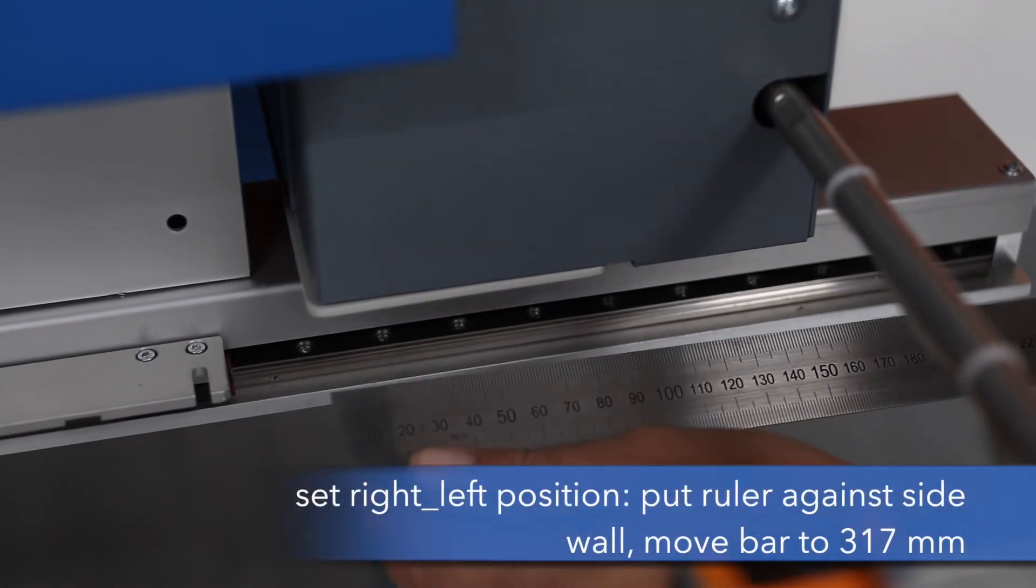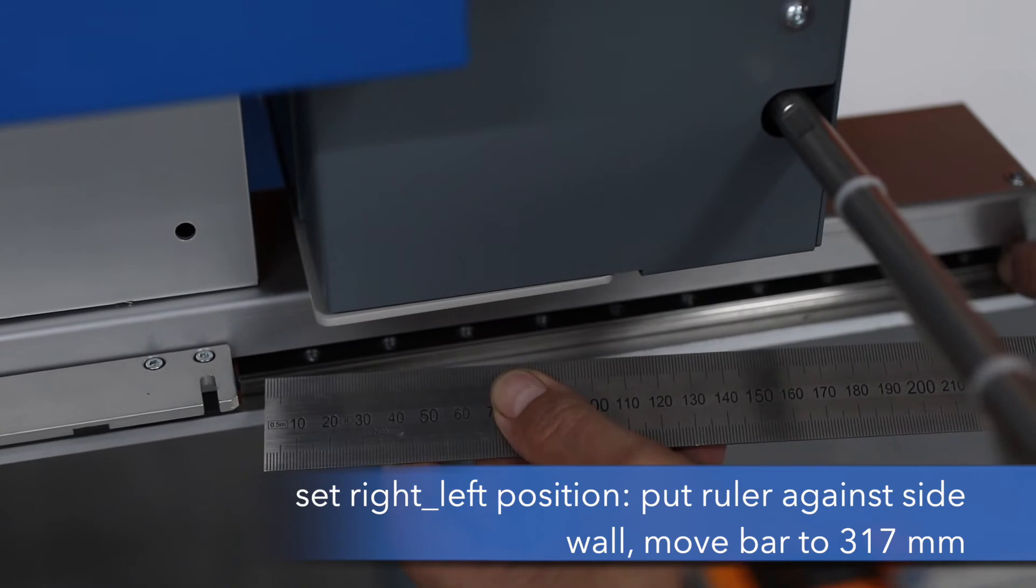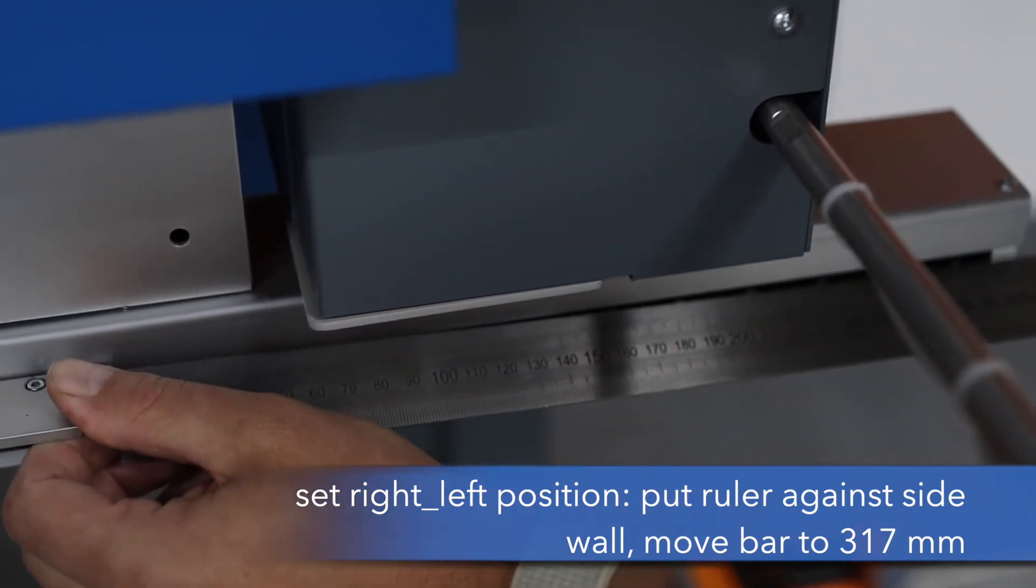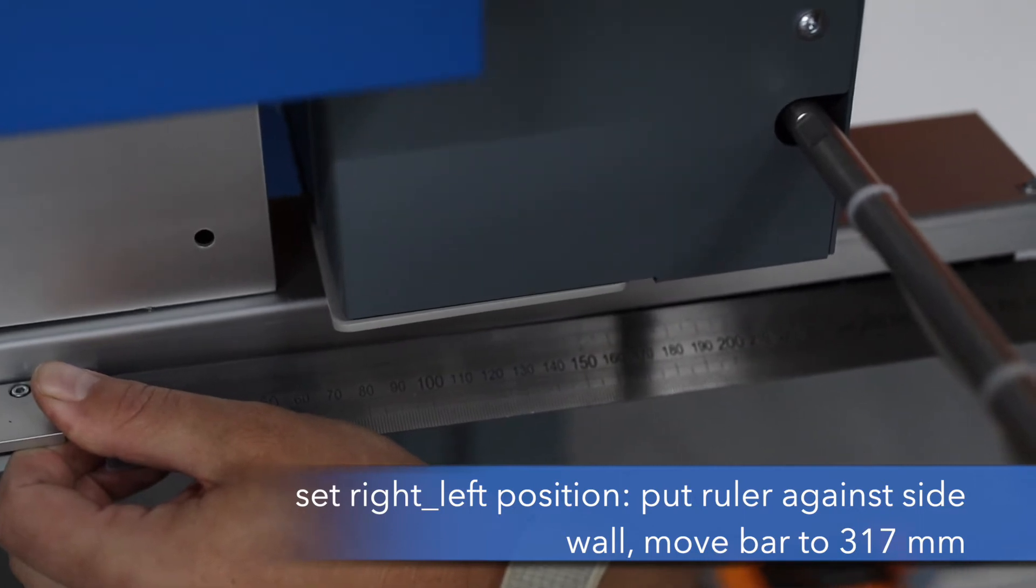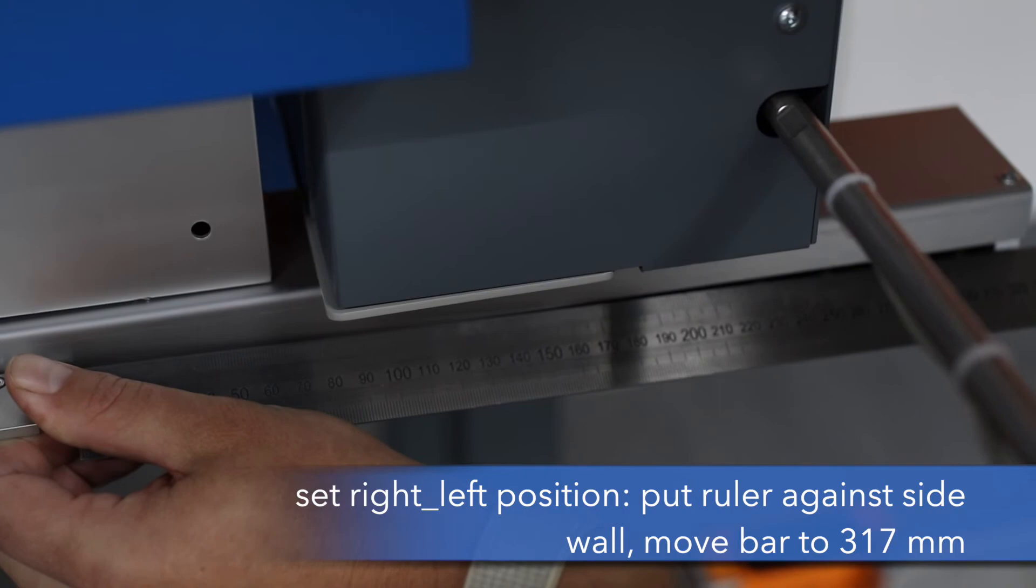So now we have to measure left and right. It should be 317 to the inside of the sidewall. So this is 317.